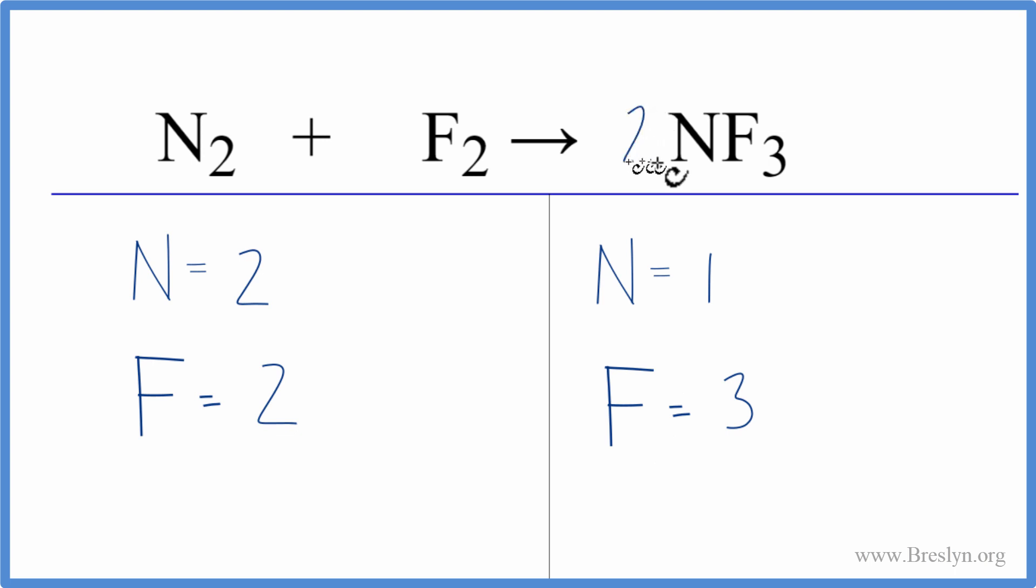If we put a two here, one times two, that'll give us the two nitrogens. So we balance the nitrogens and this two, it applies to everything here. So we have three times two. That'll give us six of the fluorines.